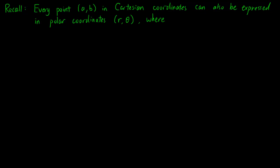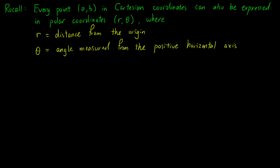We wish to introduce another form of complex numbers. First, we recall that every point in Cartesian coordinates can also be expressed in polar coordinates, where r is the distance from the origin and θ is the angle measured from the positive horizontal axis.